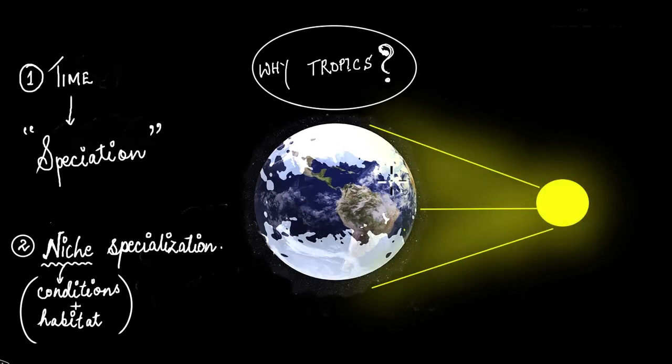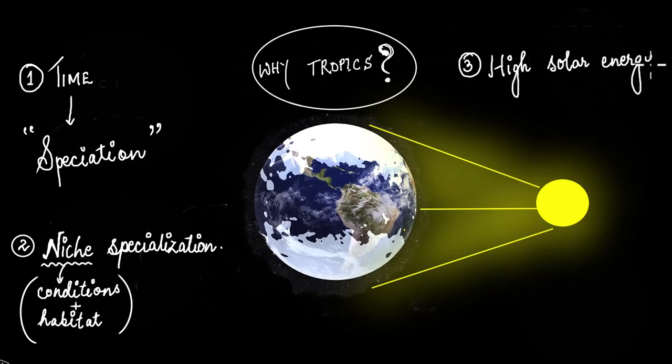Now let's move on to the third and another famous hypothesis, which says that the position of the Earth and the Sun is such that the tropics receive higher solar energy than the other parts. Higher solar energy means higher productivity.